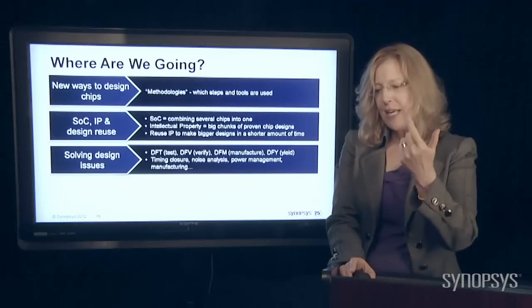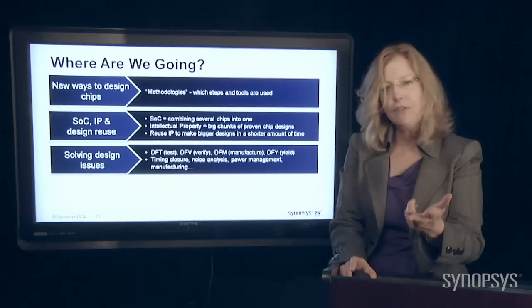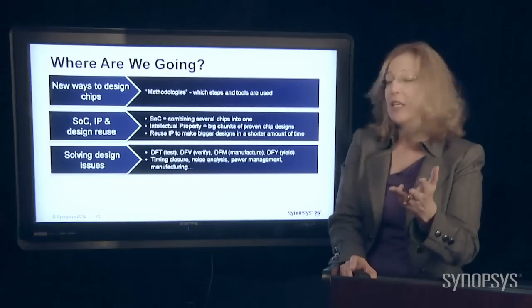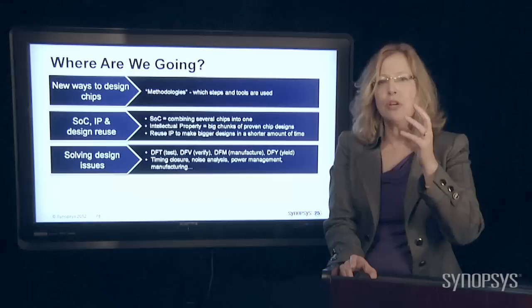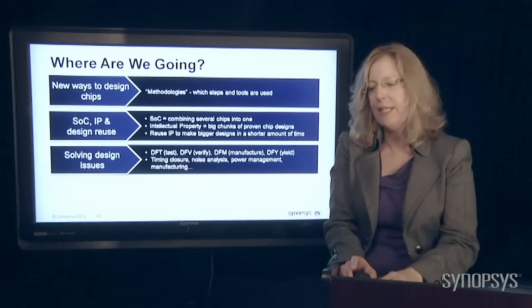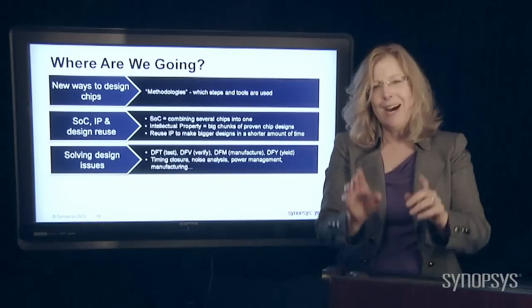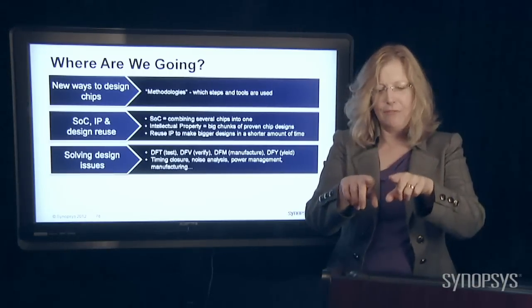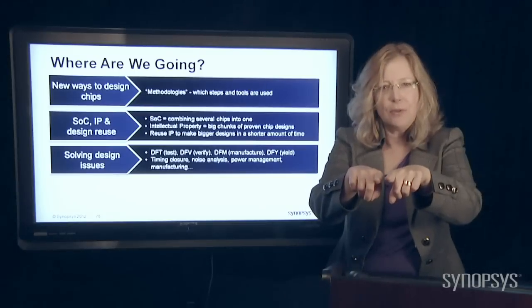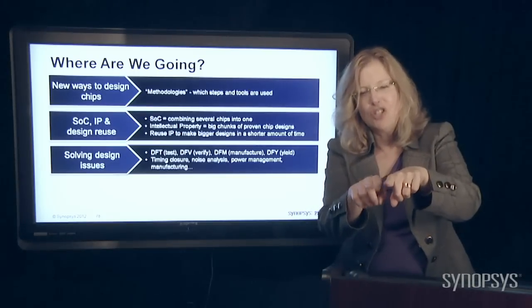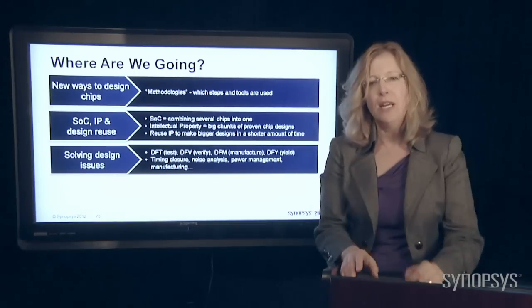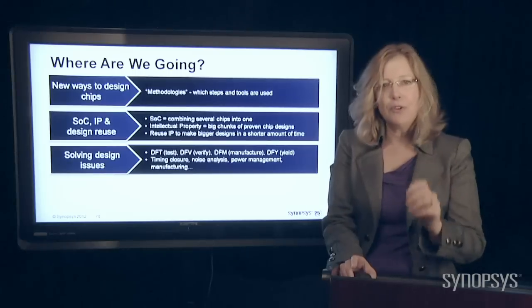These things, design for test, design for verification, design for manufacturing, design for yield, these are crucial kinds of things we're dealing with. And other things, I mentioned earlier in a different video that when wires get too close to each other, sometimes the electricity can jump over, interfere with the other wire. We need to solve those kinds of problems.